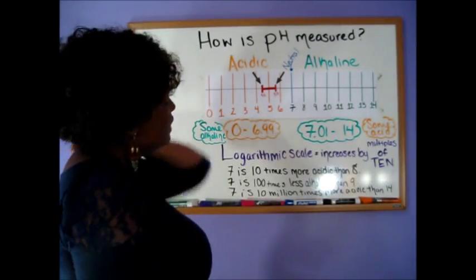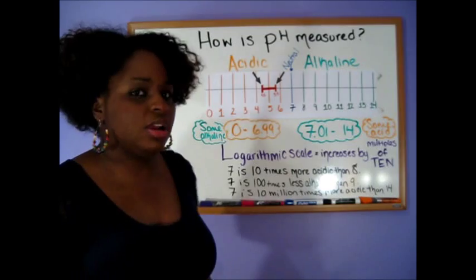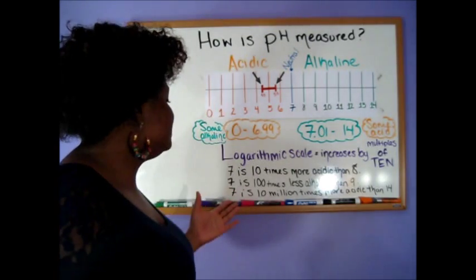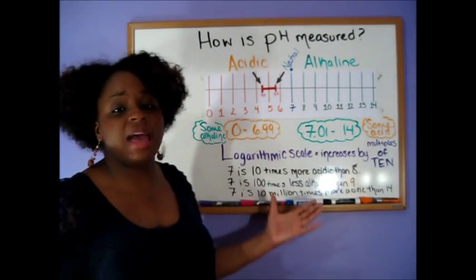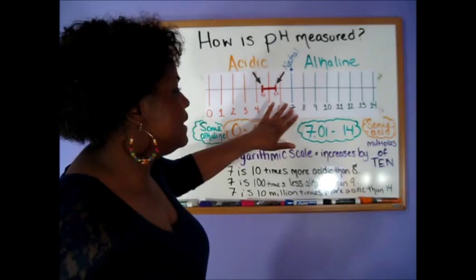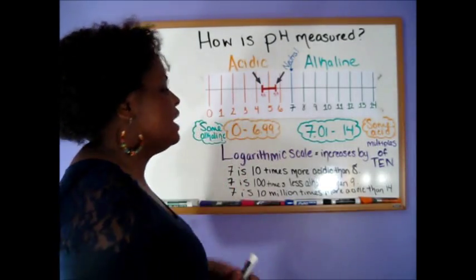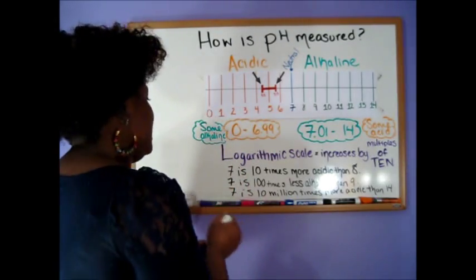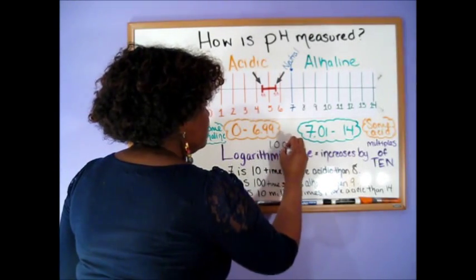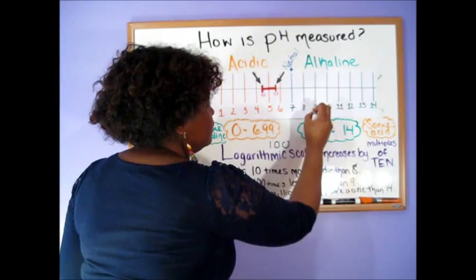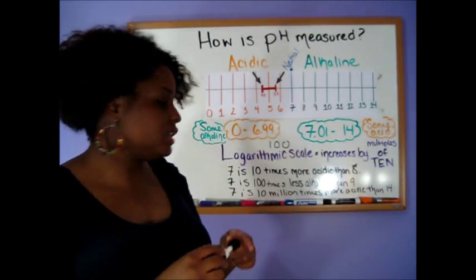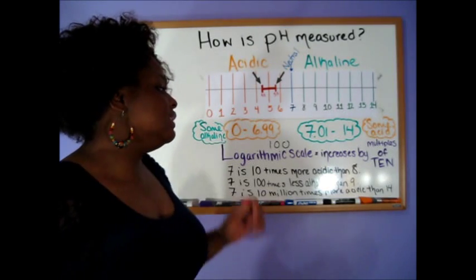Now if I'm comparing 7 to 9 and trying to figure out the alkalinity of it, I said that 7 is 100 times less alkaline than 9. So it basically jumps 1, 2. If you're looking at 1 basically, I'll put 1 right here and you add two zeros because it jumps 1, 2. You can say that 7 is 100 times less alkaline than 9.